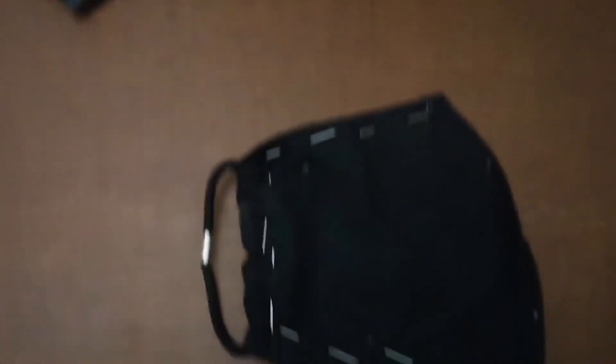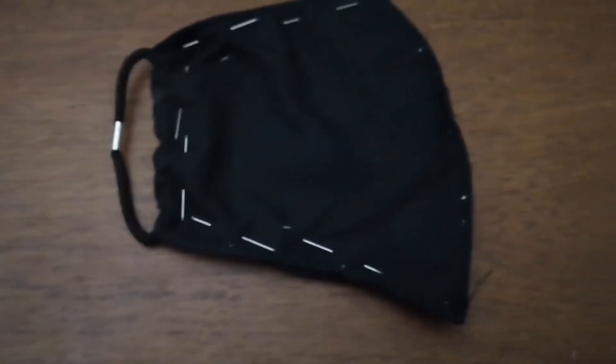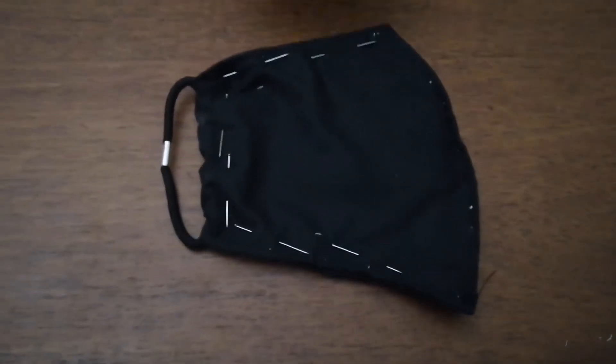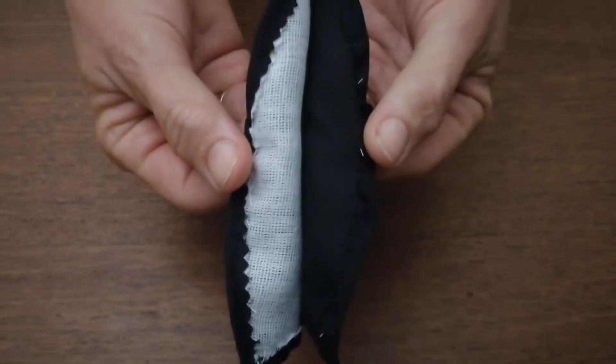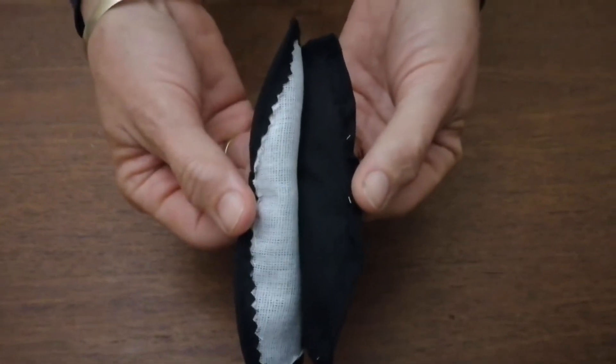And then you pin the sides together once again, and then you sew these three edges closed and leave this middle edge flap open.